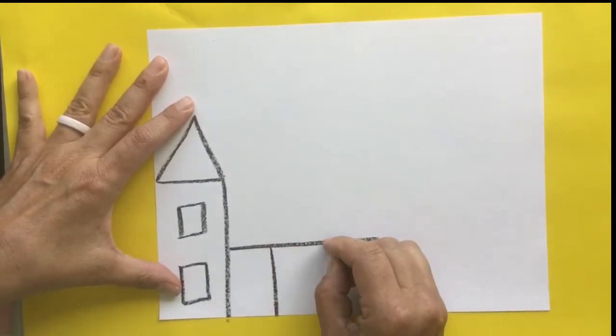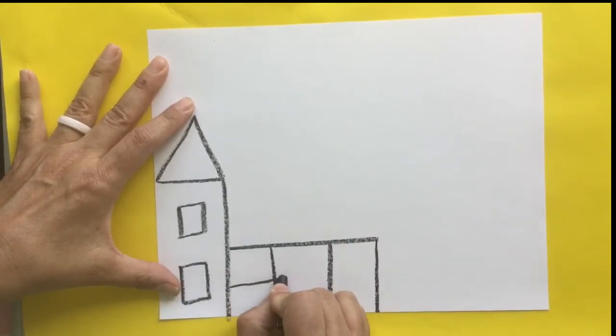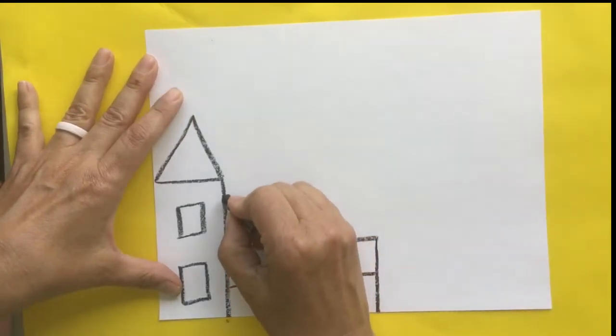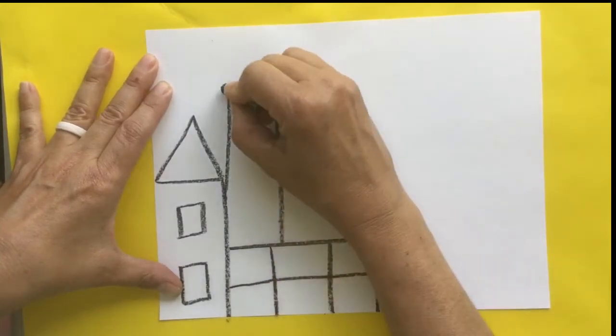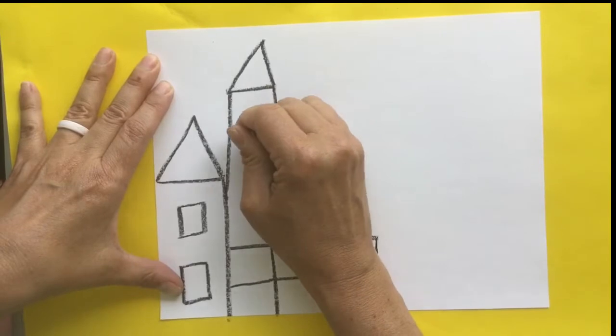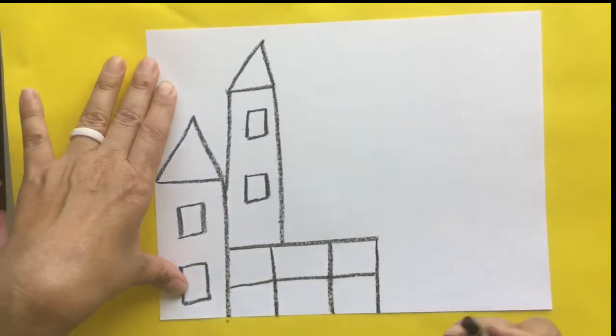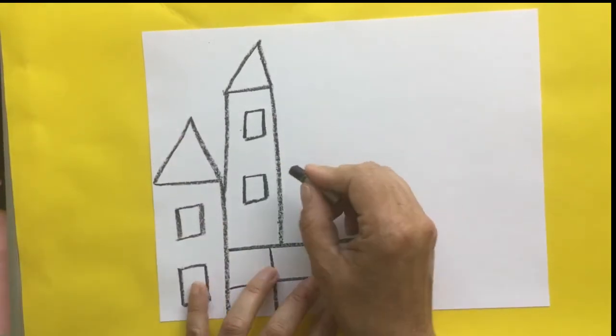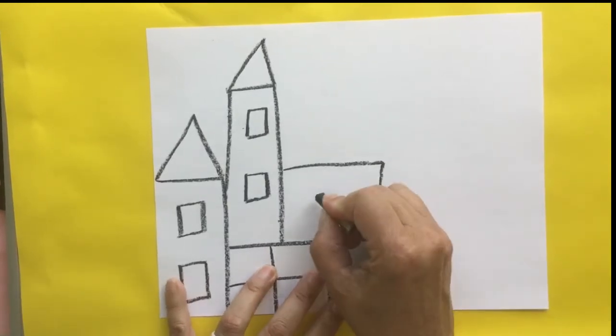He did do a lot of squares and rectangles inside squares and rectangles, so you might want to do that too to make it a little bit more interesting looking. But you may draw your castle however you want. I am drawing my castle with black crayon, and if you have a black crayon, you probably would want to use it for this project.